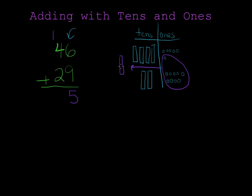Now let's count the tens. There's 1, 2, 3, 4, 5, 6, 7 tens. So I'll put that in my tens column. I get that 7 because 1 plus 4 is 5 plus 2 more is 7. So the answer is 75.